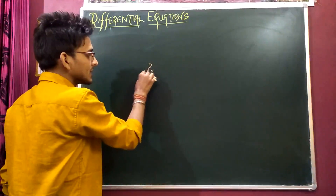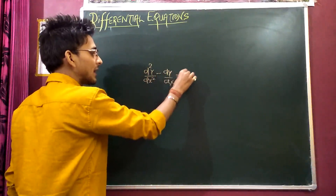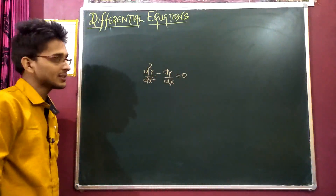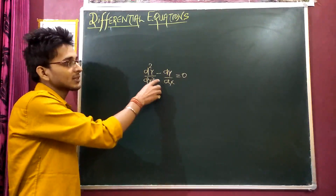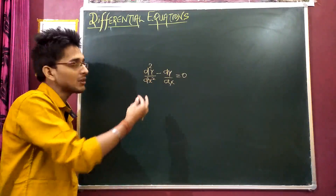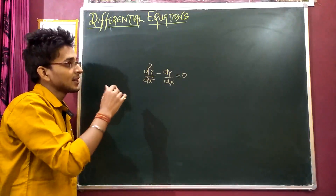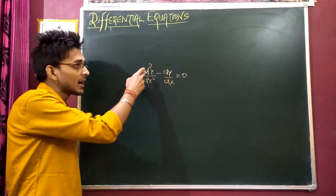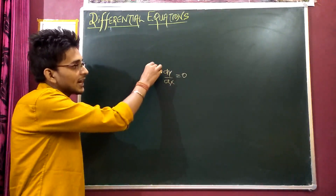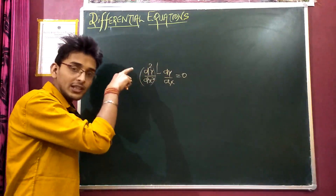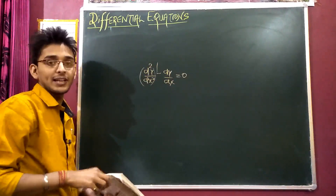Consider d²y/dx² minus dy/dx is equal to zero. Students, the highest power of the highest order derivative — the highest power of the implicit function y — these are the key concepts to identify order and degree.